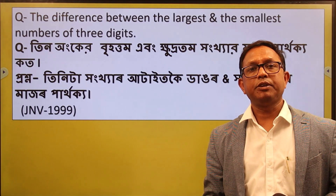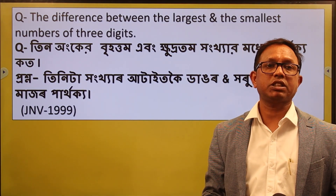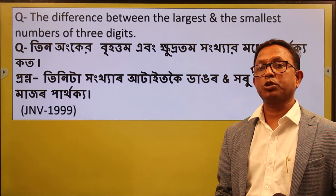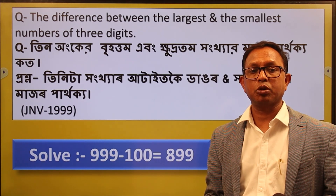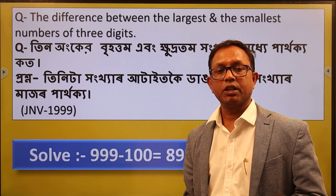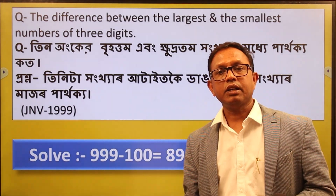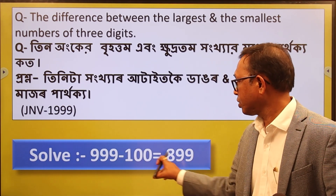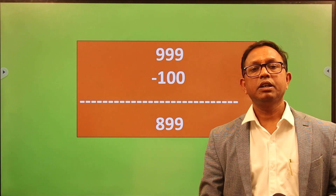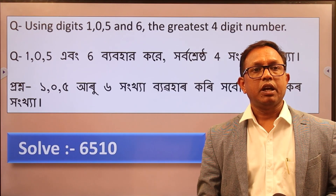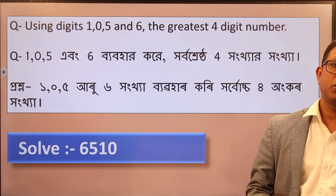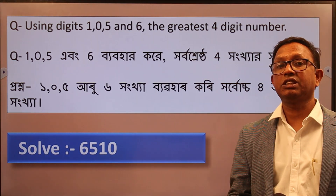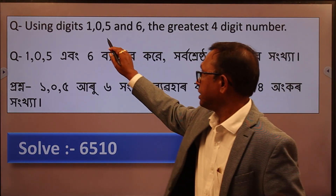The difference between the largest and the smallest number of three digits. The difference between the three-digit number and the four-digit number.